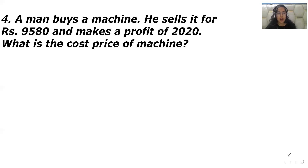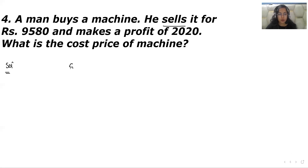Our next question: a man buys a machine and sells it for Rs 9,580, making a profit of Rs 2,020. What is the cost price of the machine? First write down the values. He sells — so the selling price is Rs 9,580 — and he makes a profit of Rs 2,020.